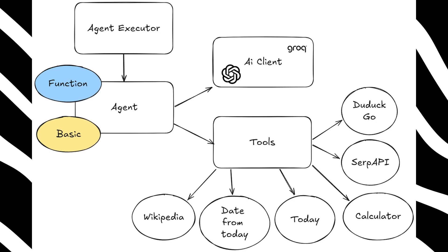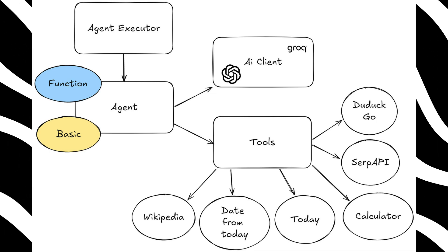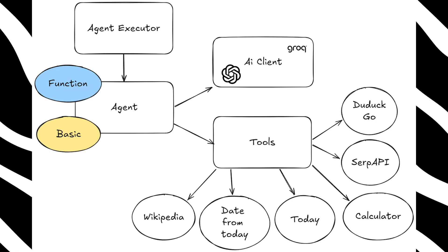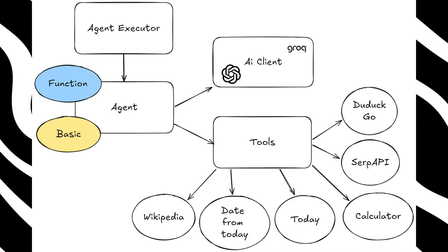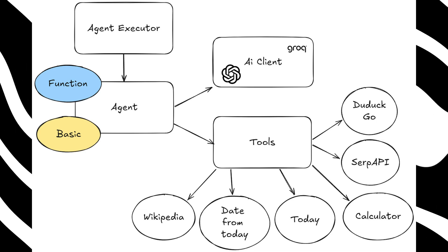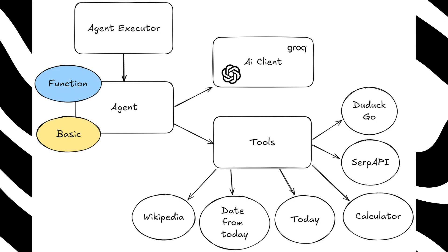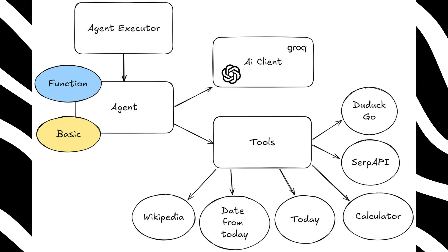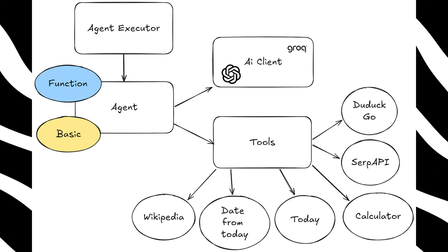Here's how it works. The React agent has access to a collection of tools. Each tool is designed to do something specific, like answering a question, performing a calculation, or looking up information. When you give the agent a task, it first analyzes the problem and decides which tool is the best fit to start with.